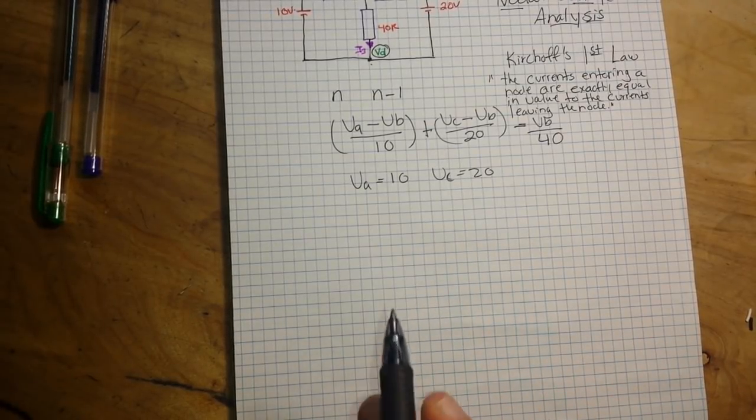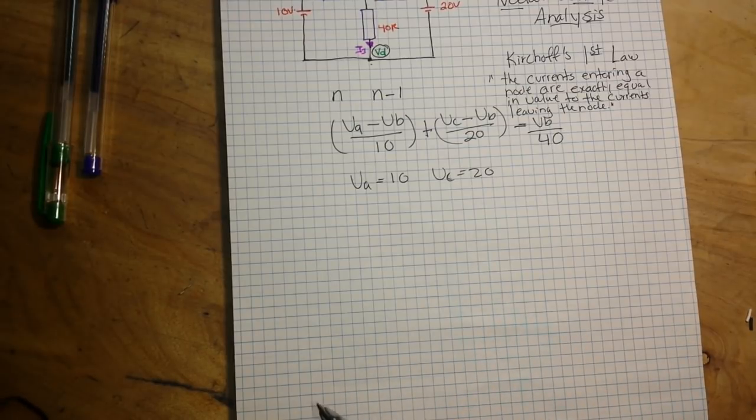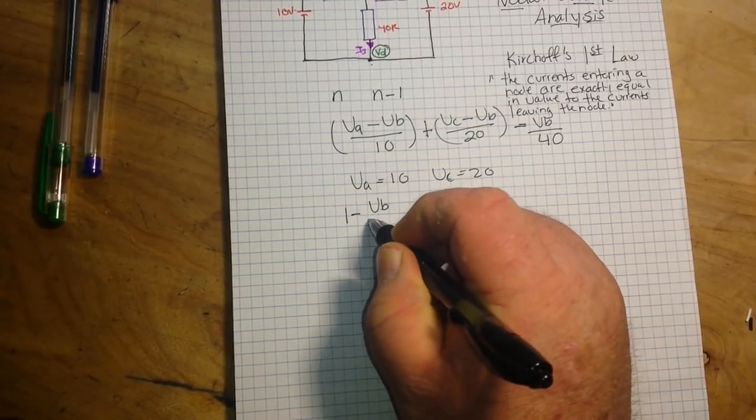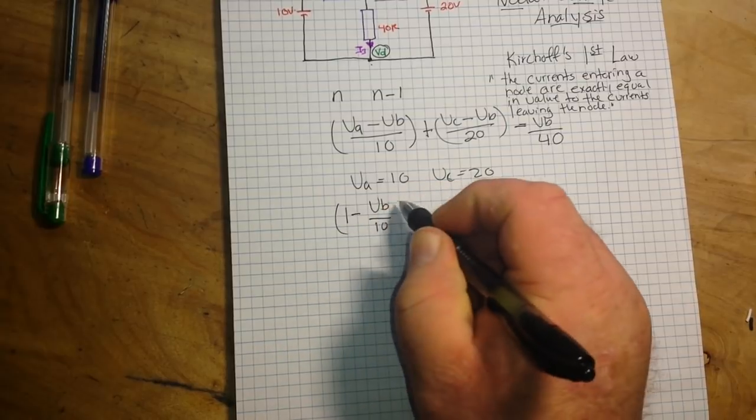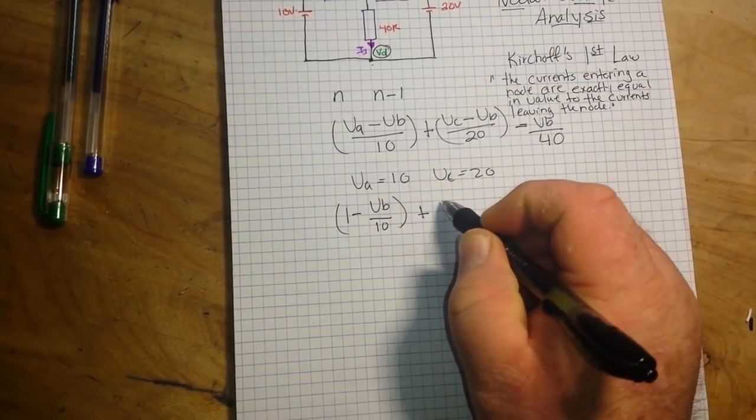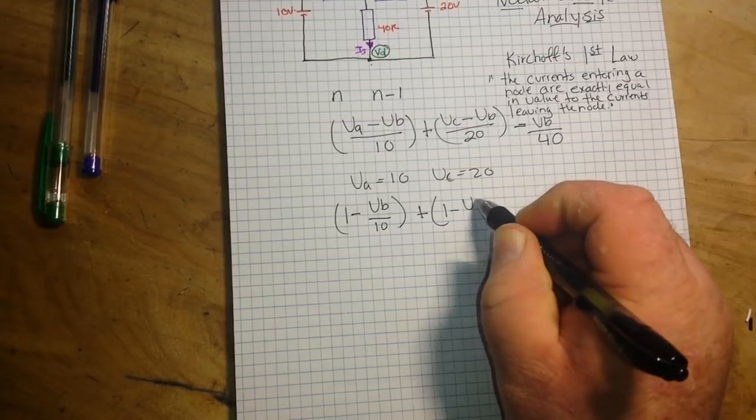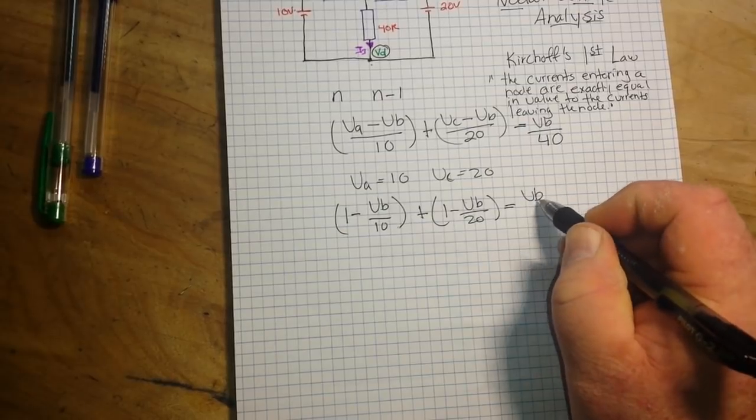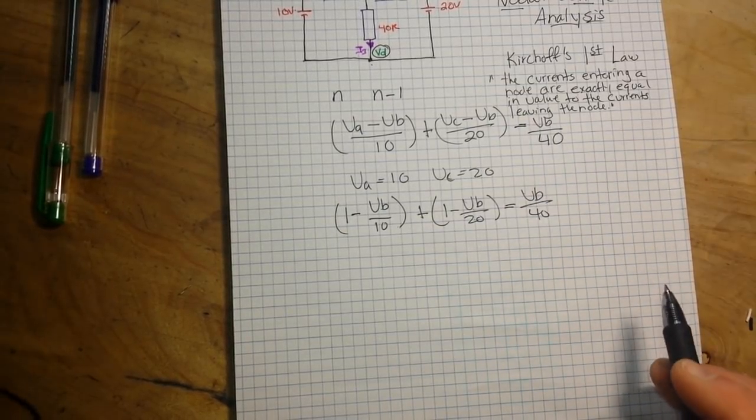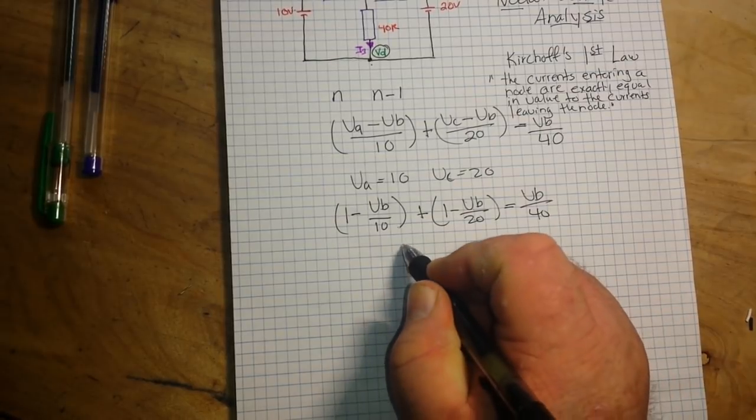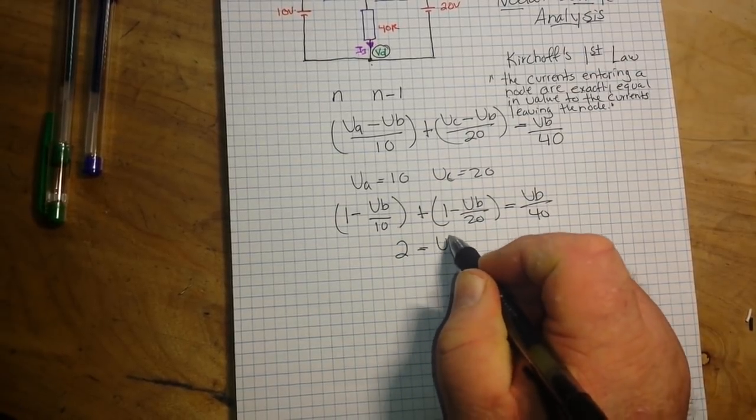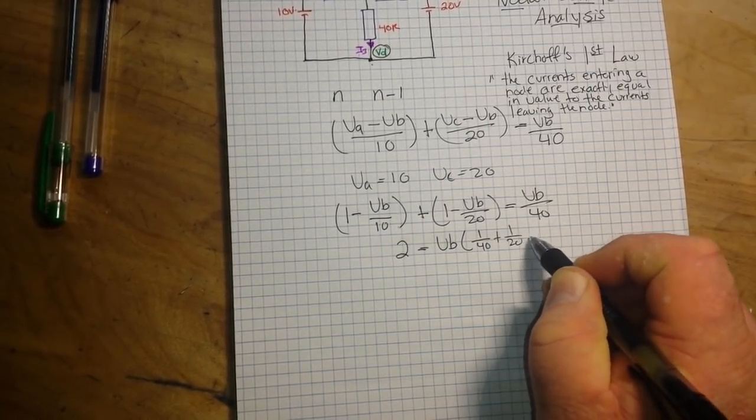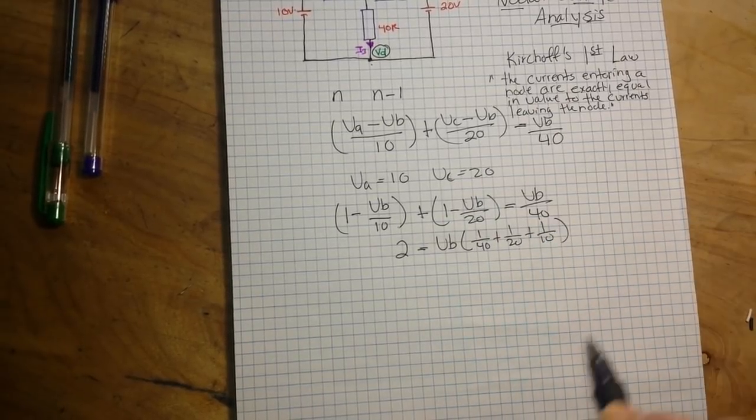So we just carry on knowing that the currents in and currents out must be equal. So we say (10 - VB)/10 plus (20 - VB)/20 equals VB/40. Everything comes out the same.